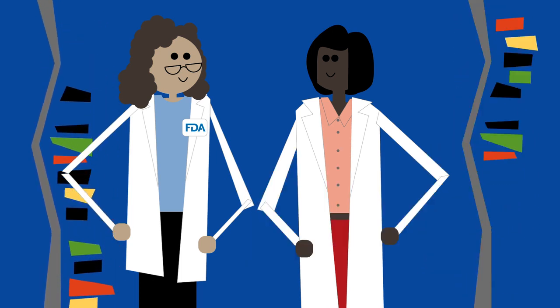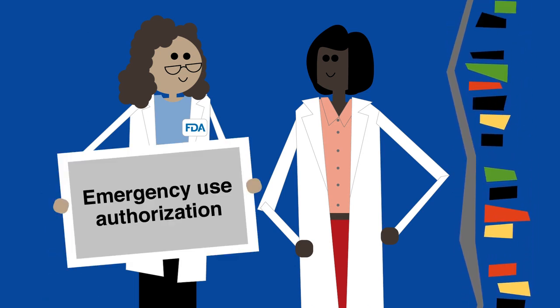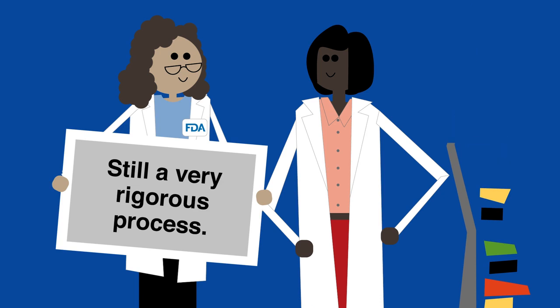scientists can ask the FDA for permission to distribute the vaccine under an emergency use authorization. This is still a very rigorous process.